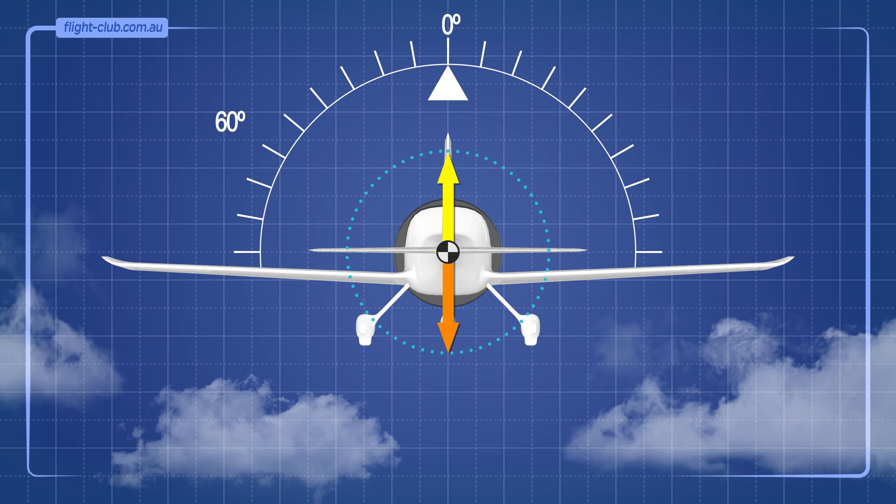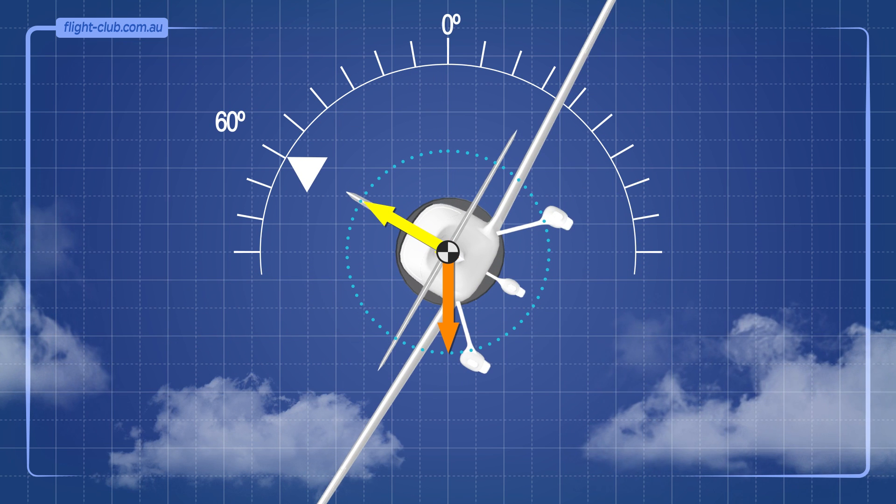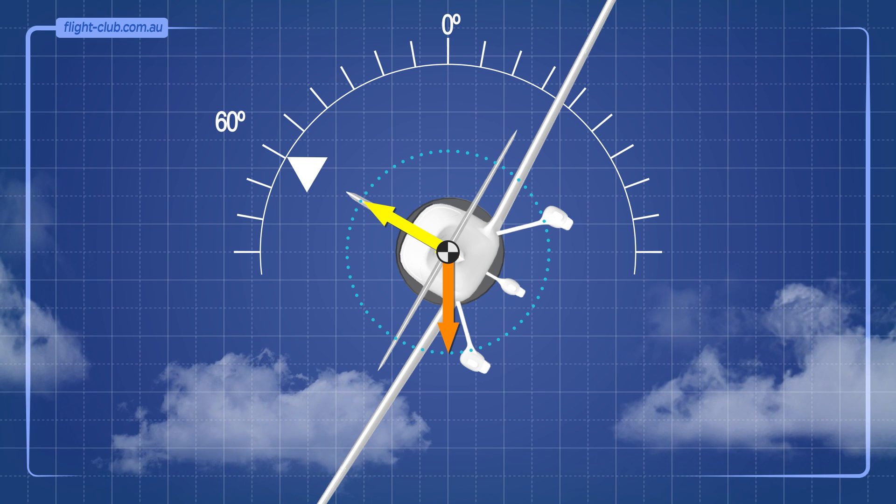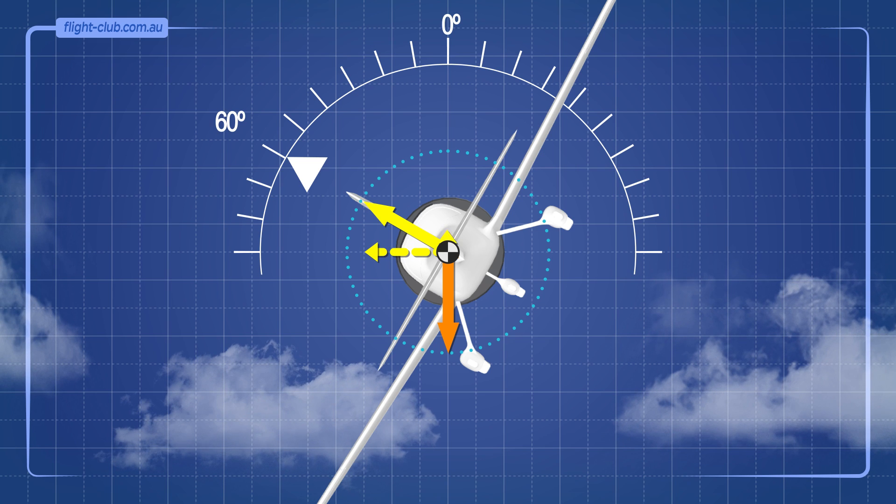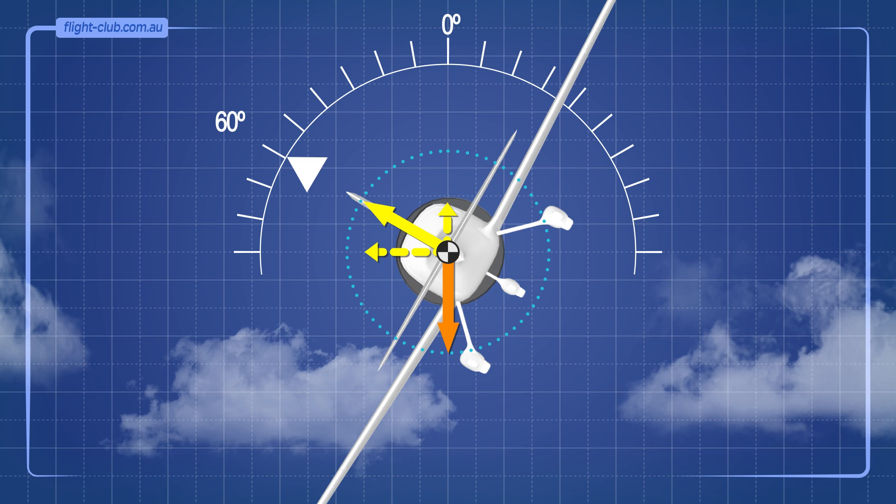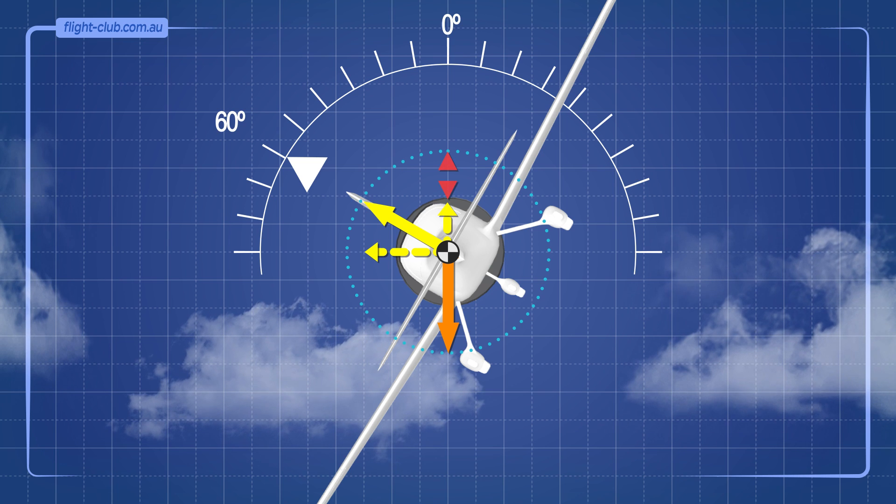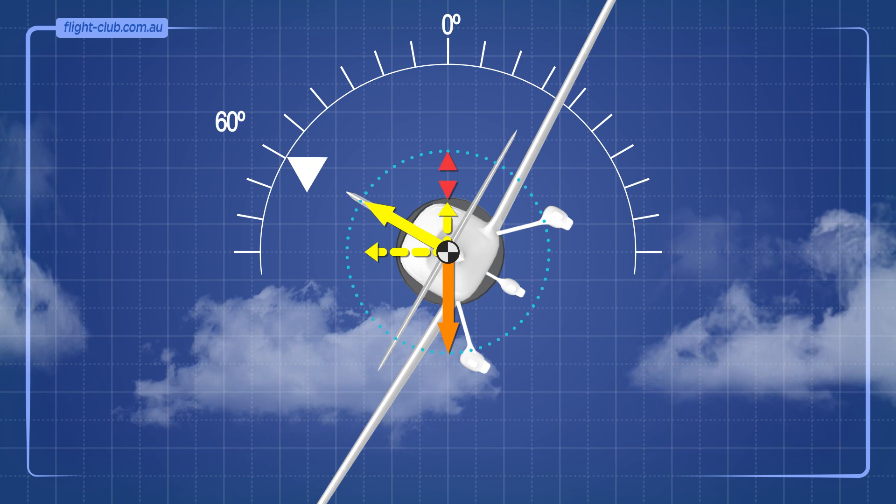Let's have a look at a slightly more conventional 60 degree angle of bank. At 60 degrees, the lift is not entirely horizontal. Some of it points sideways and some of it points vertically up, opposite to the aeroplane's weight. This vertical lift component is still less than the opposite weight, so the aeroplane cannot maintain its altitude.